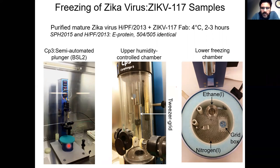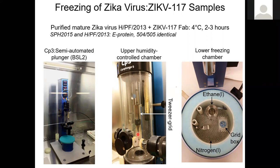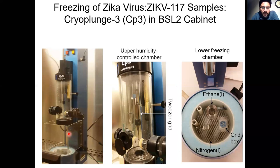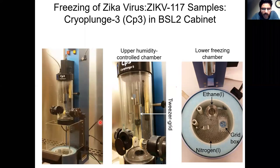The CP3 plunger consists of a tweezer-grid assembly with a tiny cryo-EM grid attached at the end. You apply the sample on this grid through a narrow hole using a micropipette, then blotters move in to remove the excess liquid from the grid, and then the grid plunges down for flash freezing in liquid ethane. Once you have a cryo-EM grid, you insert it into a microscope for data collection.